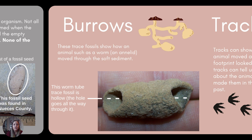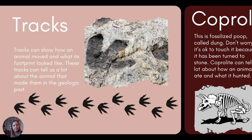Burrows are traces of how an animal like a worm would have moved through soft sediment. A lot of the burrows that get preserved are on the smaller side, because larger scale burrows — like what a groundhog would make — are harder to preserve than a small wormhole. If you see a tube-like feature like this, it shows you that the organism would have slithered through the sediment in this fashion.